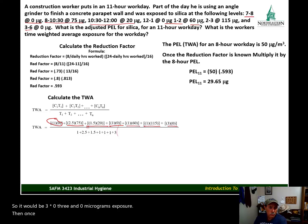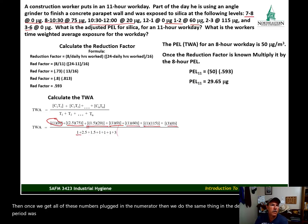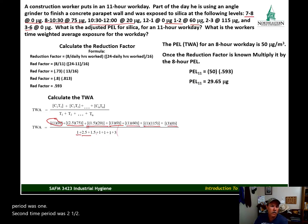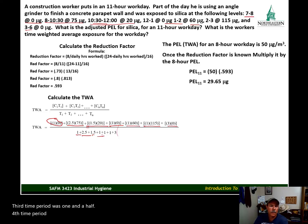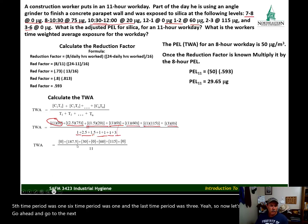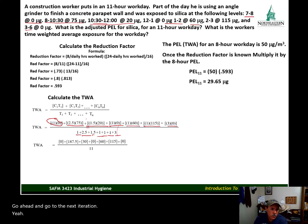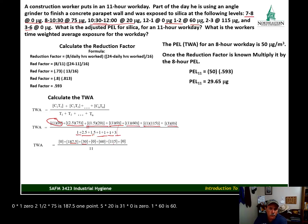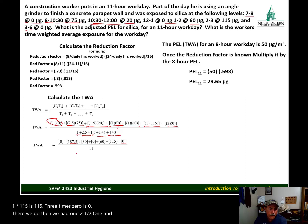In the denominator we add the time periods: 1 plus 2.5 plus 1.5 plus 1 plus 1 plus 1 plus 3 equals 11. In the numerator: 0 times 1 is 0; 2.5 times 75 is 187.5; 1.5 times 20 is 30; 1 times 0 is 0; 1 times 60 is 60; 1 times 115 is 115; 3 times 0 is 0. Adding the numerator: 187.5 plus 30 plus 60 plus 115 equals 392.5.